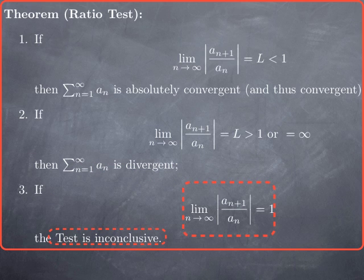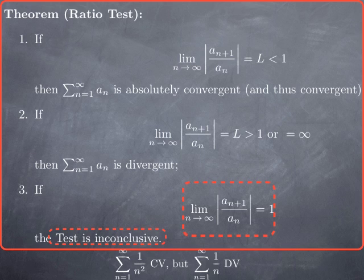The reason why it's inconclusive is clear from simple examples. Take the series from 1 to infinity of 1 over n squared. This is a convergent p-series, because p equals 2, which is strictly greater than 1. For that convergent series, if we look at the ratio a_{n+1} over a_n, we get n over (n+1) squared, which clearly goes to 1. So this is an example where the limit of the ratio is 1 and the series is convergent.